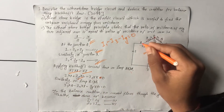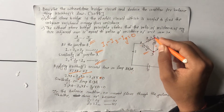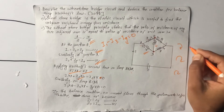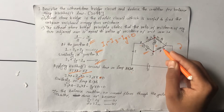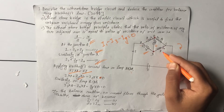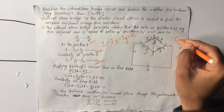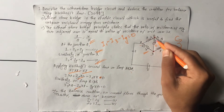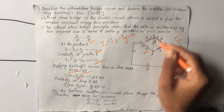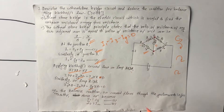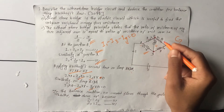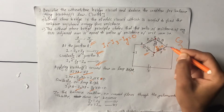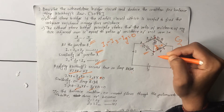Similarly, for the other loop: I3 into Q in the clockwise direction, then iG into G in the anti-clockwise direction gives a minus sign. Now applying the balance condition: when iG equals zero, the galvanometer shows no deflection and current through it is zero.